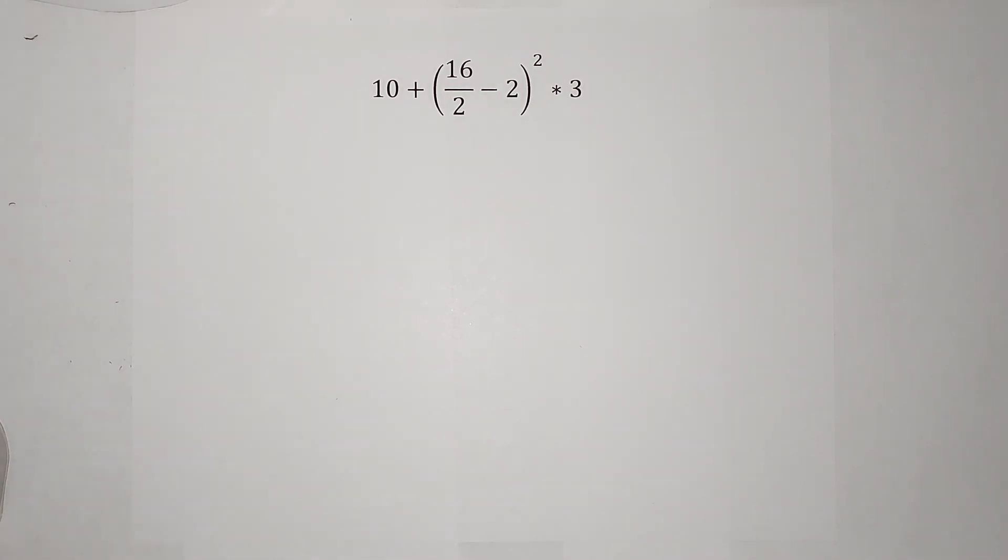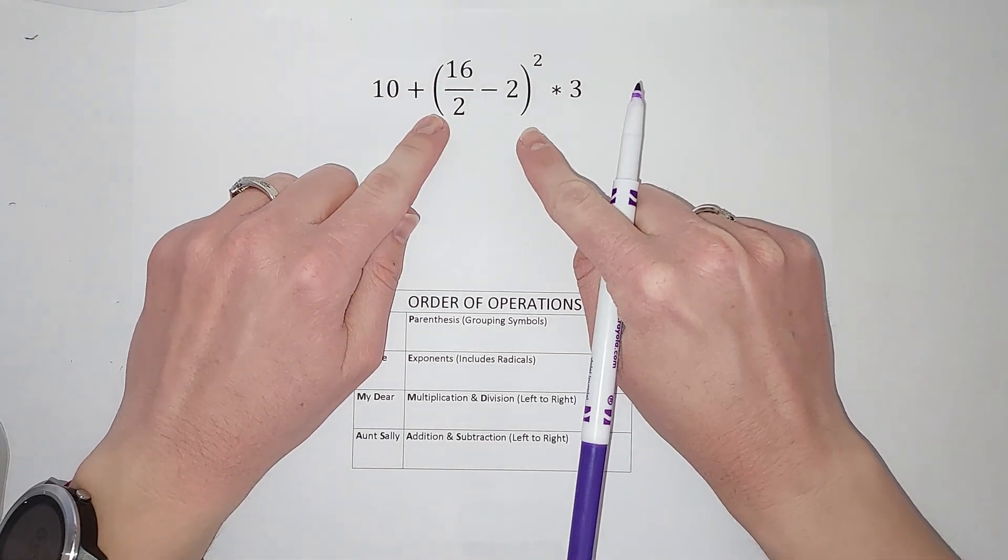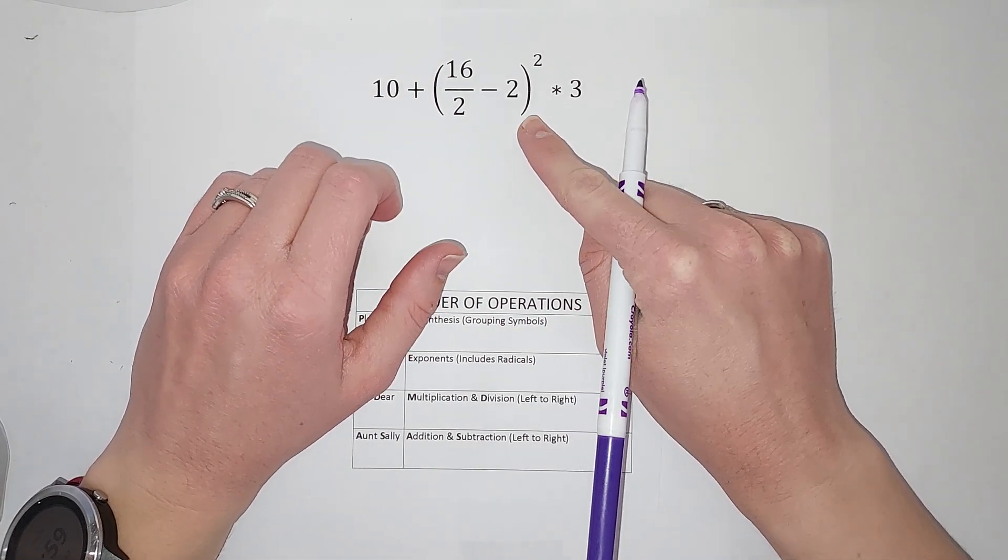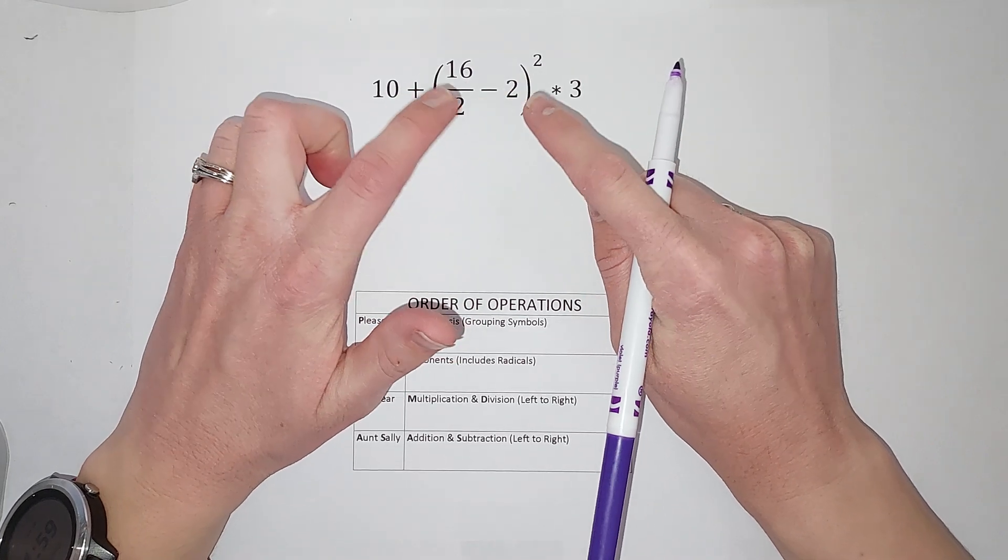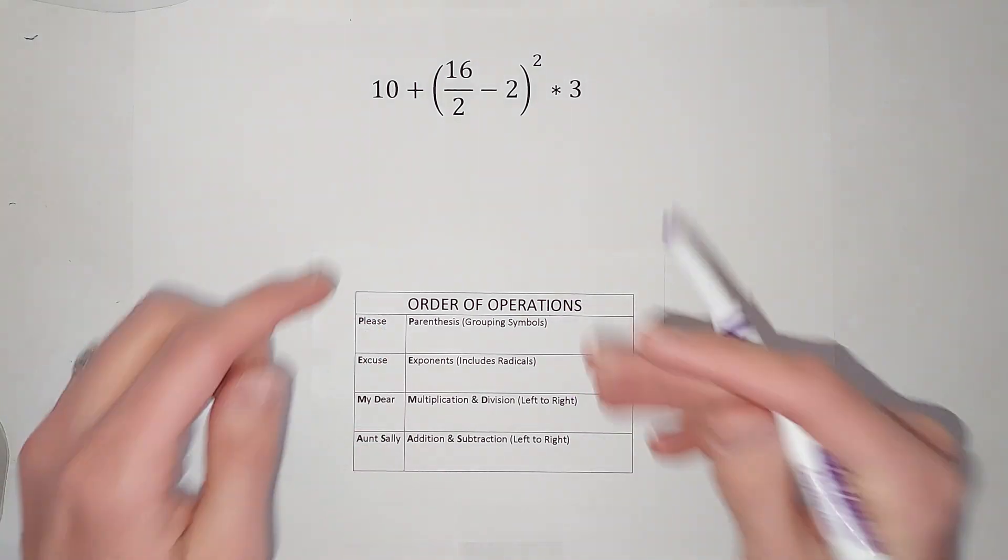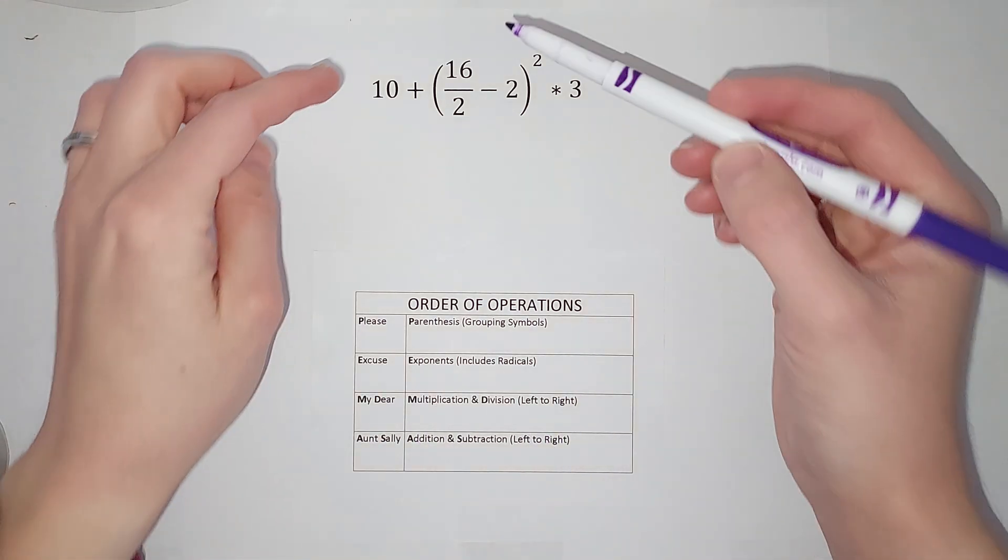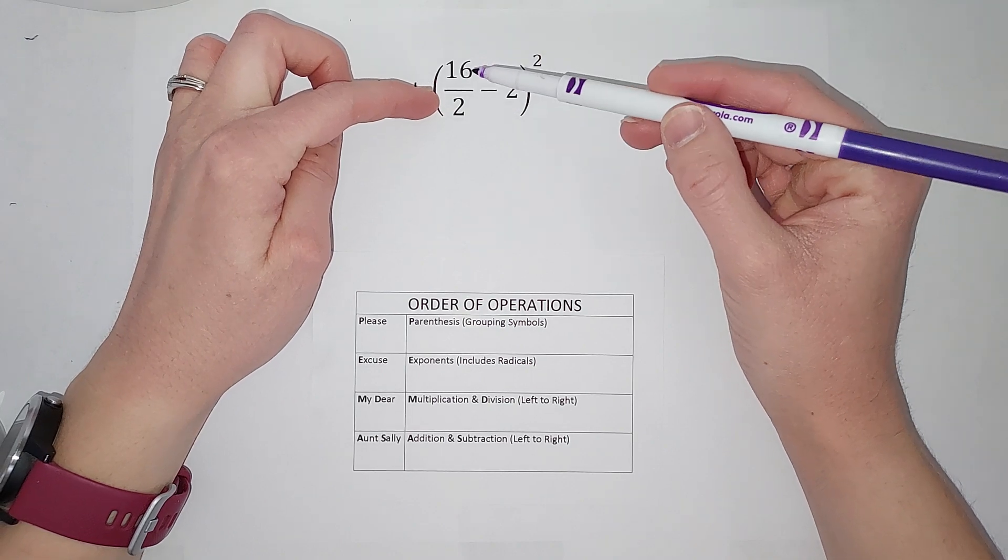Following our order of operations, the first thing I need to do is parentheses or grouping symbols, which I do have. So that means I do whatever is inside of there first. You kind of follow this again but just looking at what's inside. That 16 over 2 is division, so that's what I'm going to do first before the subtraction.